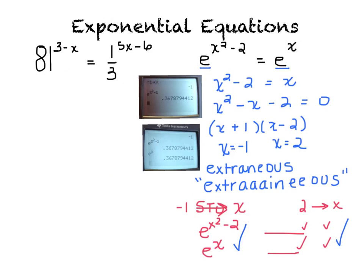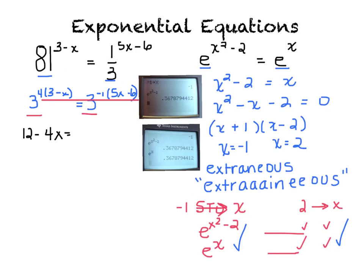Moving to this example — this is like the evaluating we've been doing. We make them go to the same base: 81 is 3 to the fourth with 3 minus x up top, and one-third is 3 to the negative one with 5x minus 6 up here. Now that my bases are the same I can set my exponents equal: 12 minus 4x equals negative 5x plus 6. I add 5x to the left and subtract 12 from the right and get x equals negative 6.